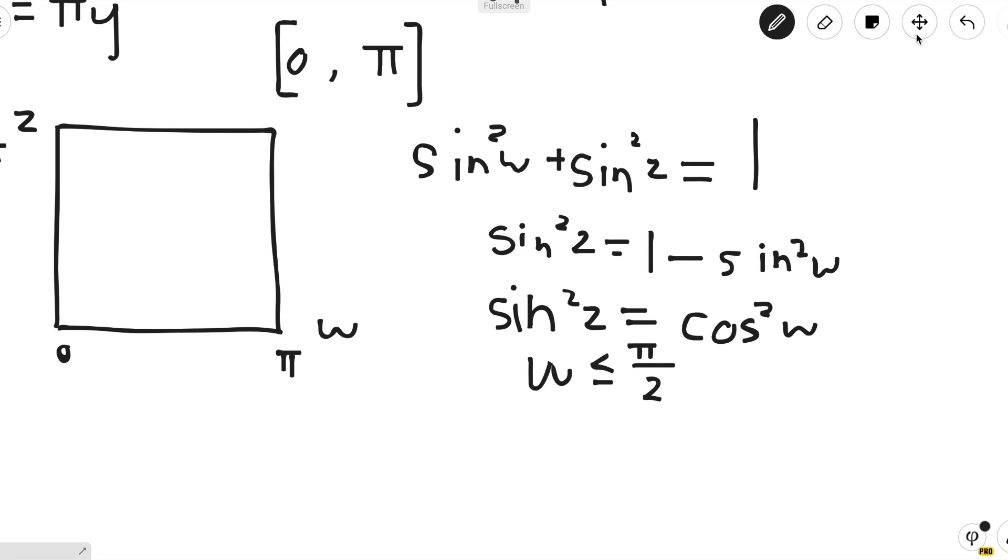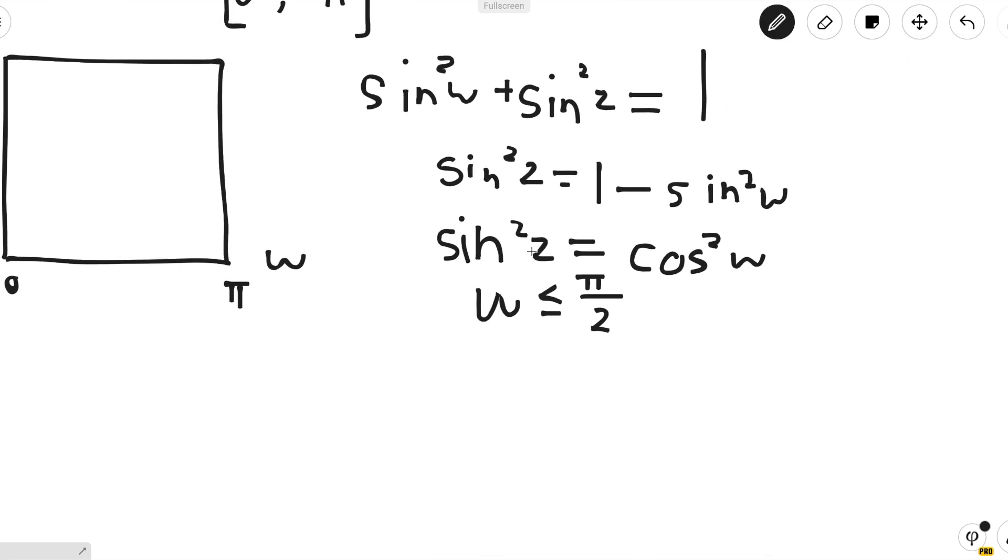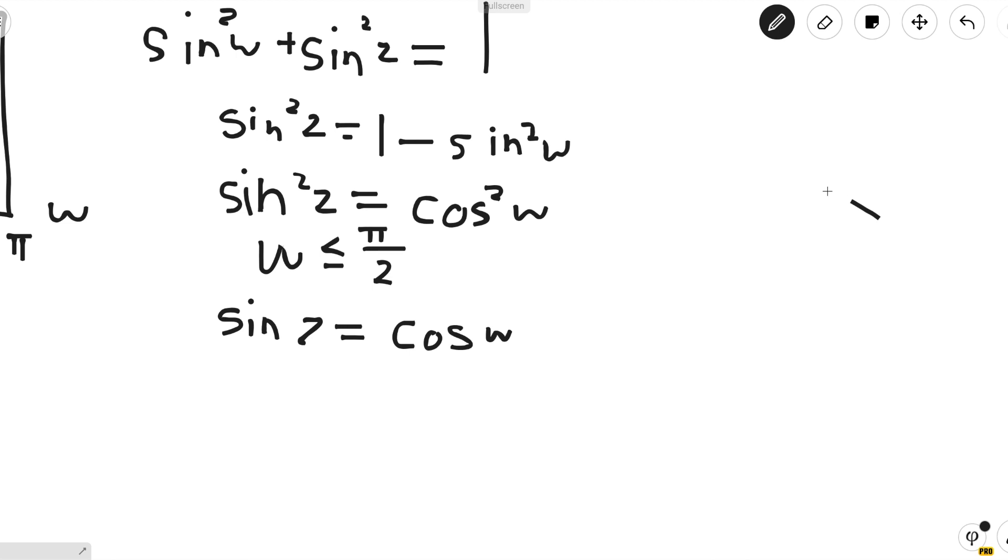Let's check the w ≤ π/2 case. To solve for this, we can just take the square root and get sin z = cos w. And if we draw the unit circle on z and w, if we fix what w is,